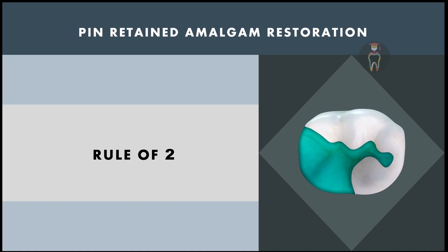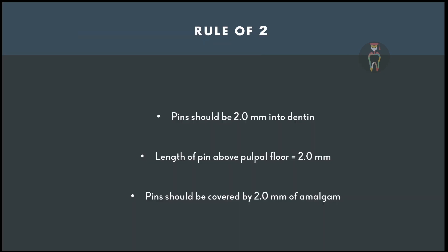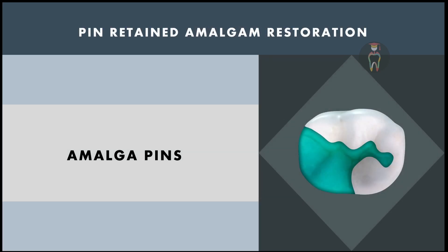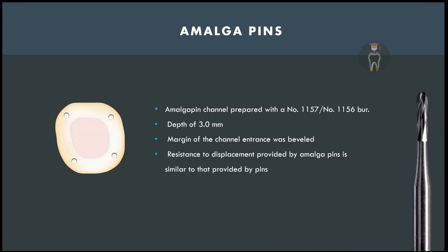It is mandatory to respect the rule of two while doing a pin retained amalgam restoration: the pin should be engaged at least 2 mm into dentine, the length of the pin above the pulpal floor should be at least 2 mm, and the pins should be covered by at least 2 mm of dental amalgam.